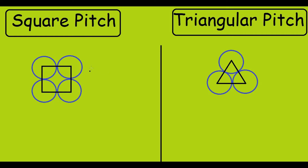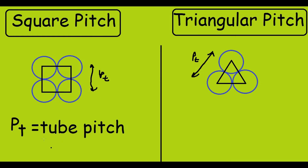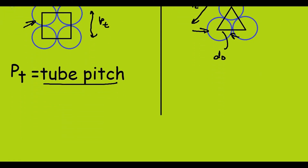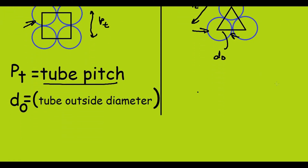In this diagram, the tube pitch is given by this length, known as the tube pitch. Let me denote it with Pt. Similarly here, this is also the tube pitch, Pt. The diameter of these tubes I will take as DO — the tube outside diameter.